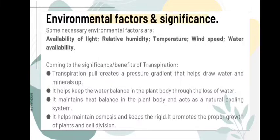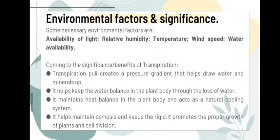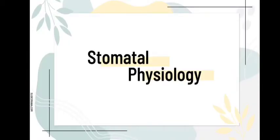The minerals come up with the water and the plants use them in the process of photosynthesis. Next, transpiration helps to keep the water balance in the plant body — when there is water loss, the water balance is maintained. It also maintains the heat balance in the plant, acting as a natural cooling system. Finally, it helps in maintaining osmosis, keeps the plant turgid, and helps in cell division and growth.